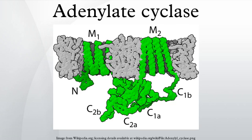Isoforms I, V, and VI are most clearly inhibited by Gi, while other isoforms show less dual regulation by the inhibitory G protein. Soluble AC is not a transmembrane form and is not regulated by G proteins or forskolin; instead it acts as a bicarbonate/pH sensor. It is anchored at various locations within the cell and, with phosphodiesterases, forms local cAMP signaling domains.